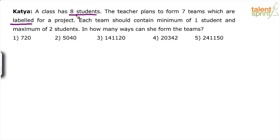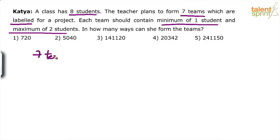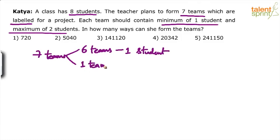So basically eight students and seven teams are to be formed. Obviously, a minimum of one student will be in each team and a maximum of two. If eight students are there and seven teams have to be formed, obviously each team will have one student definitely. Only one team will have one extra student. So out of seven teams, six teams will have one student each, and only one team will have two students.